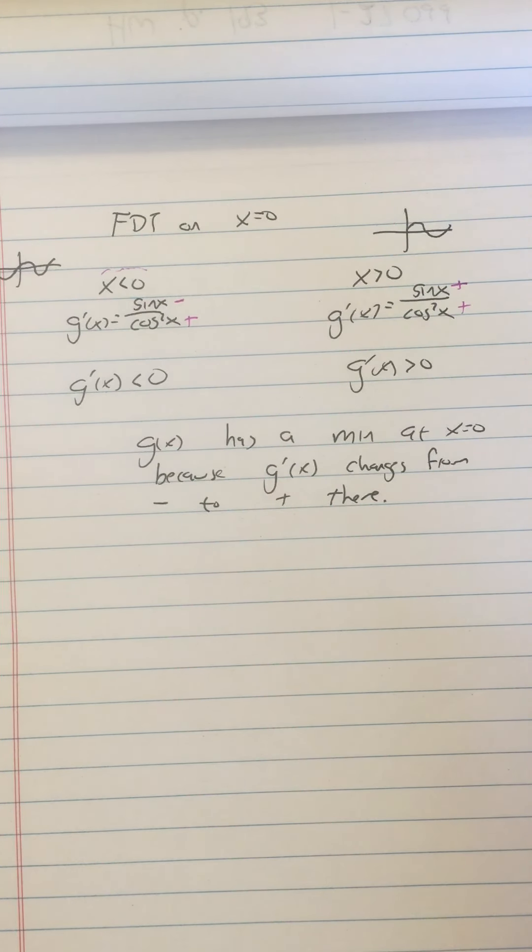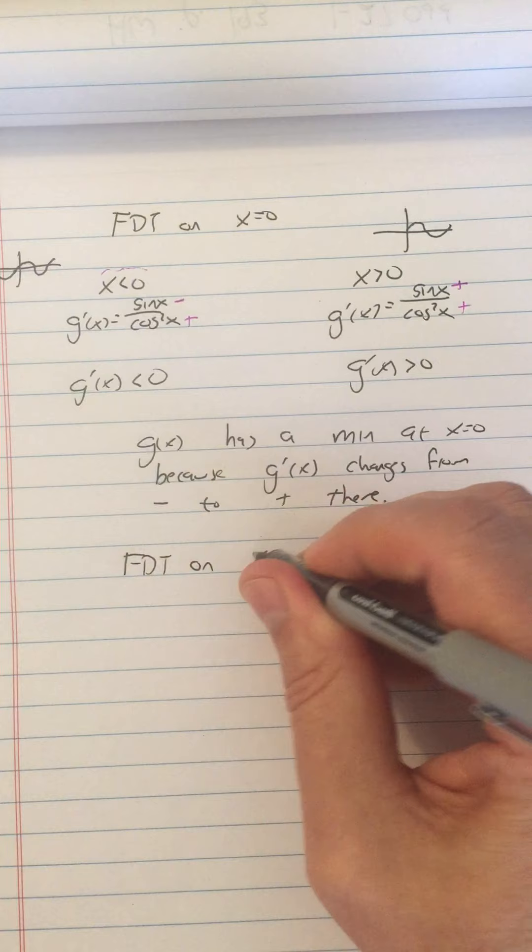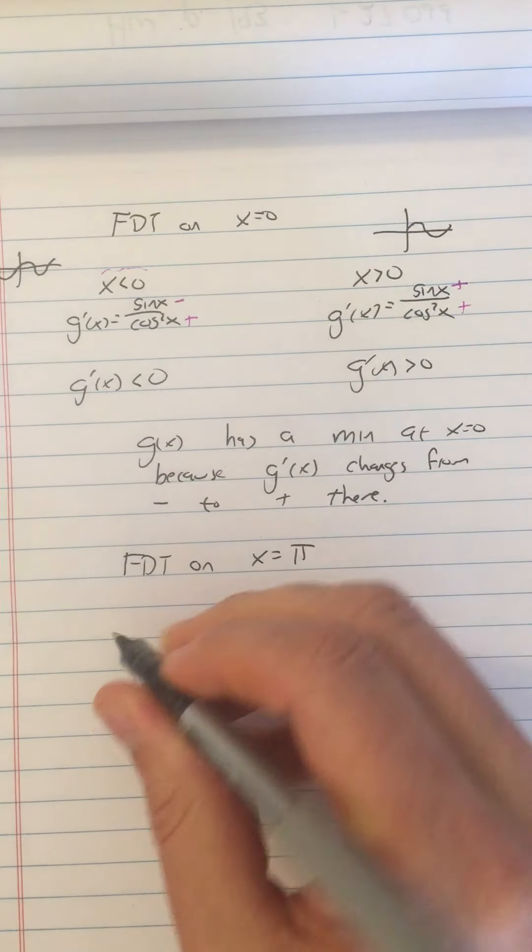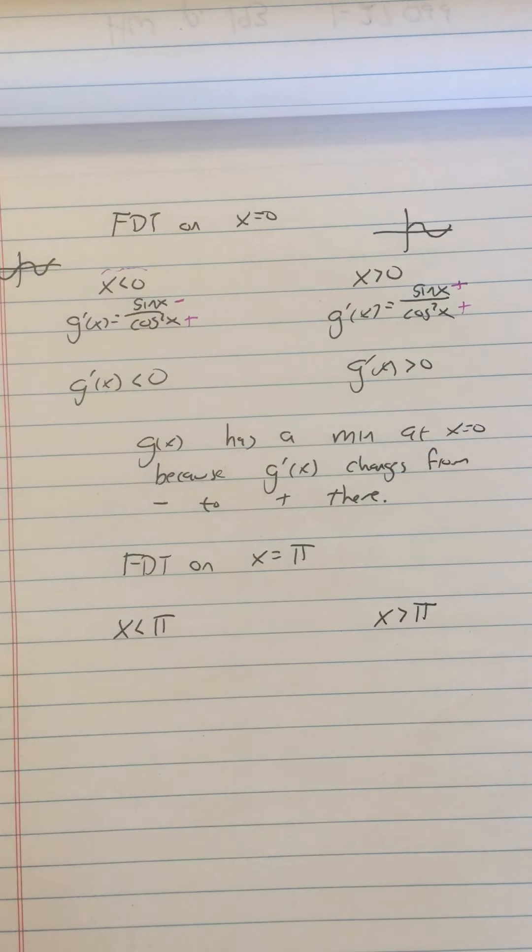What about the other critical point where x equals pi? Now let's do the first derivative test on x equals pi. So that one's going to set up with x less than pi and x greater than pi. You should see if you can finish this one out, and I'll save it for my next video.